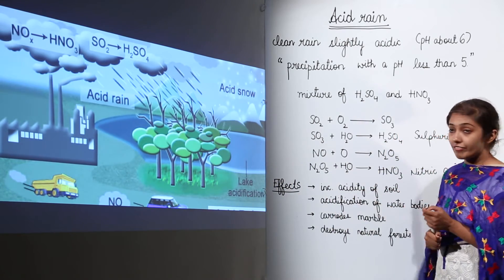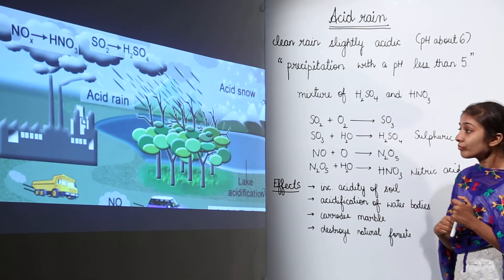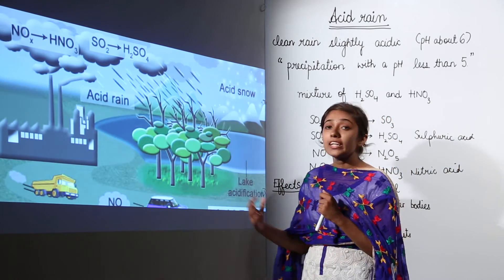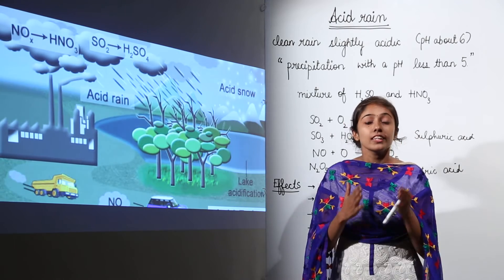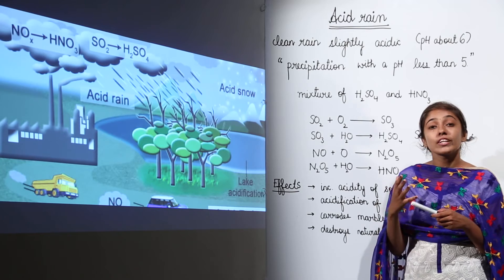Now what is the first effect? It increases acidity of soil. So when acid rain is going to fall, this is going to lead to the acidity of the soil. So when the soil is going to be acidic, then obviously the plant life, the flora, is going to suffer.